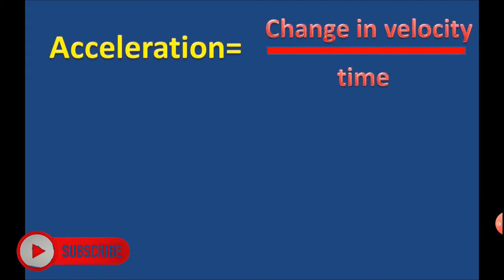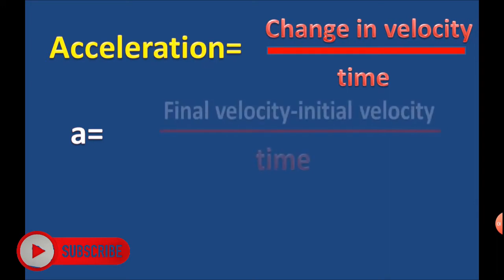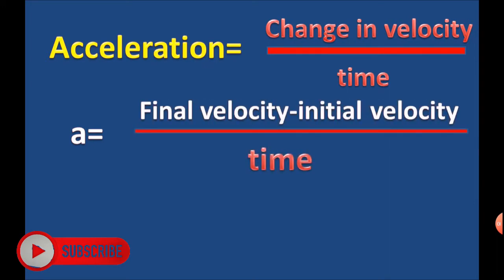Acceleration is equal to change in velocity upon time. Acceleration, denoted by a, is equal to final velocity minus initial velocity upon time, or a = (v - u) / t.